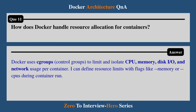Question 11: How does Docker handle resource allocation for containers? Docker uses cgroups (control groups) to limit and isolate CPU, memory, disk I/O, and network usage per container. I can also define resource limits with flags like --memory during container run.